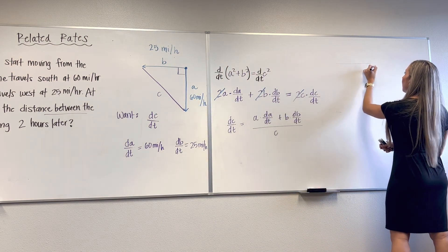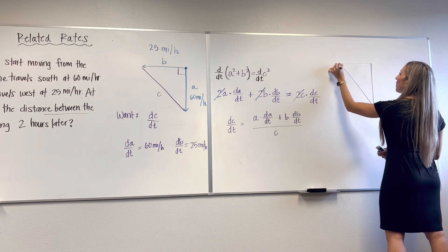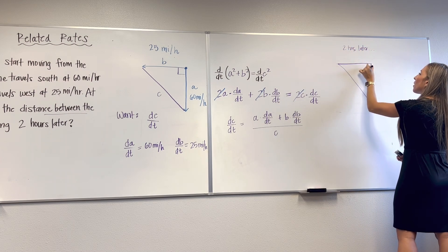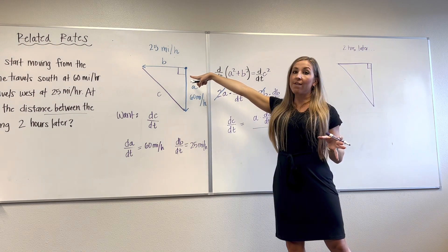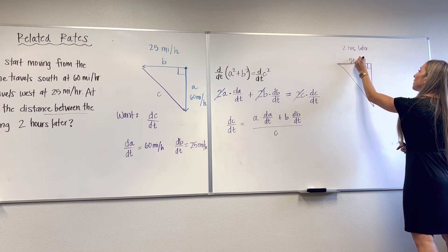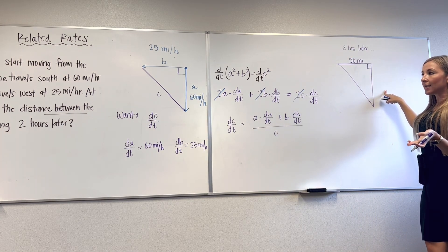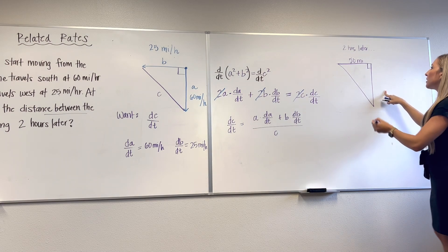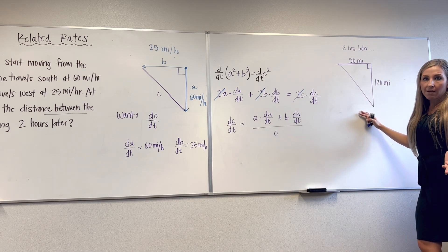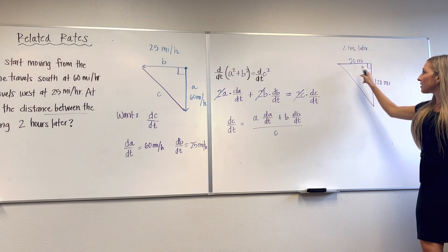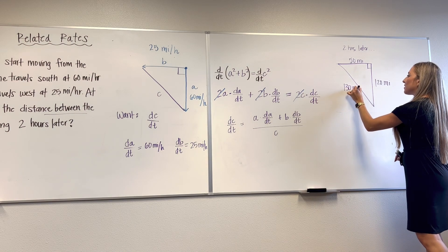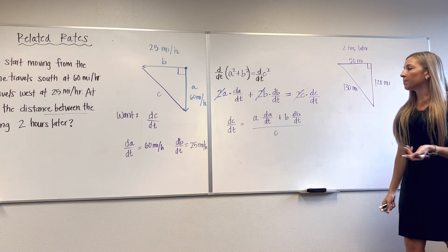So this is two hours after they take off. This is a specific triangle two hours later. What's going on? So car B travels at 25 miles per hour. So after two hours, that means it's gone 50 miles. Car A travels at 60 miles per hour. So after two hours, it has traveled 120 miles. What is C? You could do the Pythagorean Theorem. Hopefully, by now, though, you recognize this is a 5, 12, 13 triangle. So this is 130 miles. I don't need to do the Pythagorean Theorem, but you could.